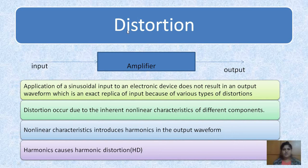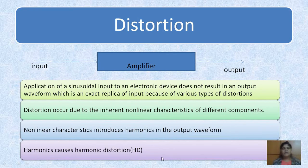So, what is distortion? Whenever we are applying the input to the device, we are getting some output. If the output is exactly a replica of the input, means exactly equal to the input, then there is no distortion. In case the output is not exactly equal to the input, we call it as distortion — there is some sort of disturbance.